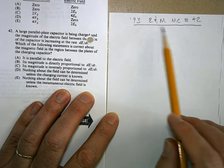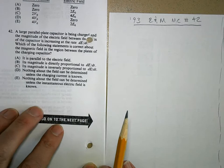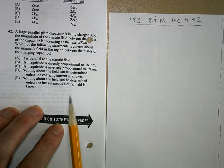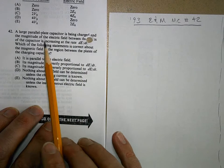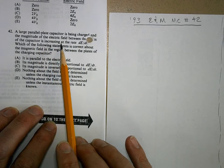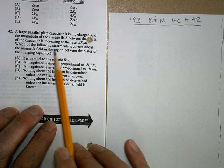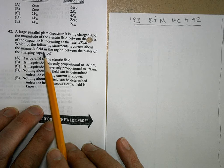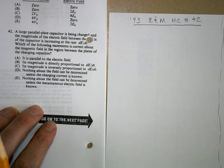From the 1993 E&M multiple choice test, this is number 42. The problem says a large parallel plate capacitor is being charged and the magnitude of the electric field between the plates of the capacitor is increasing at a rate of dE/dt. Which of the following statements is correct about the magnetic field in the region between the plates of the charging capacitor?